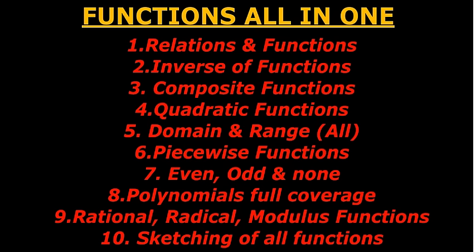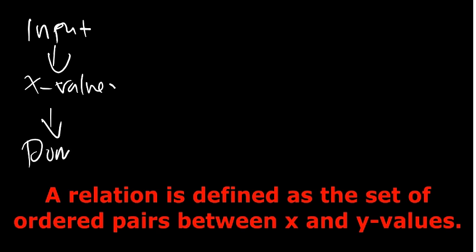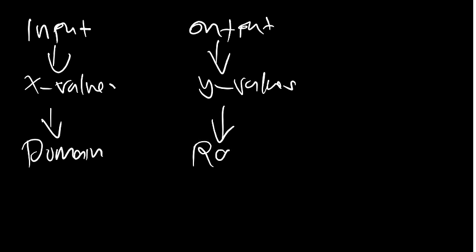Let's begin our discussion with relations and functions. A relation is basically a set of pairs of input and output values. The input values are the X values — these are also called the domain. The output values are the Y values, and these form the range. So whenever you say domain, we're talking about the X values; the range refers to the Y values.